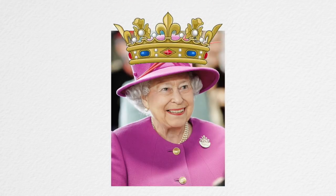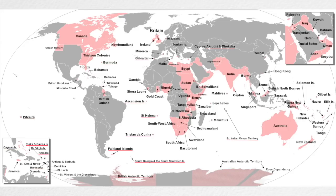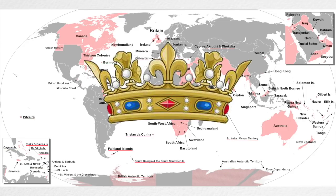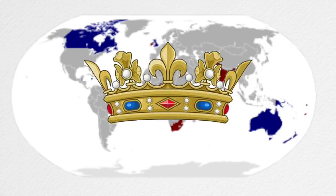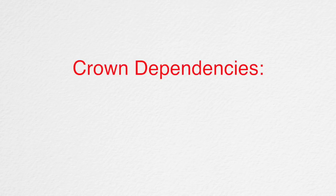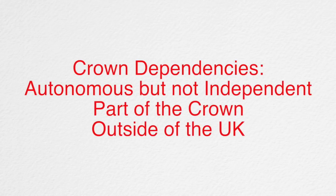In simple terms, the crown is a monarchy — not the monarch, the monarchy. It is a collection of territories that were a part of the British Empire and therefore the crown, but left the empire, yet stayed with the crown, keeping the monarch as their head of state. The crown dependencies are autonomous but not independent parts of the crown, yet still being outside of the UK.